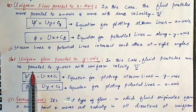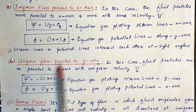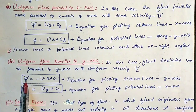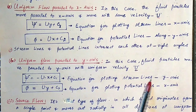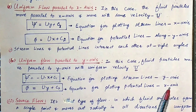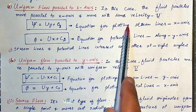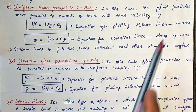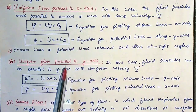In the second case of uniform flow, fluid particles move parallel to the y-axis with uniform velocity, represented by capital U. The stream function is equal to minus U into x plus C1 — this is the equation for plotting streamlines along the y-axis. And phi is equal to U into y plus C2, which is the equation for plotting potential lines along the x-axis. These two cases are reciprocal to each other.